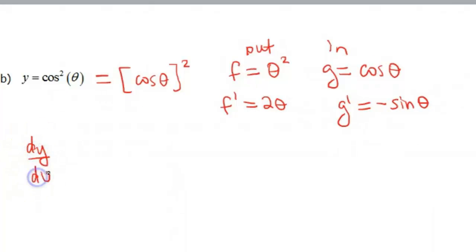So dy/dθ. Again, that notation means the derivative of y, which is what I call this function, with respect to theta, because that's my variable. Putting these together in our chain rule, we have to take our inside function, which is cos(θ), and plug it into the derivative of our outside function. So that's going to look like 2cos(θ) times the derivative of our inside function, which is -sin(θ).